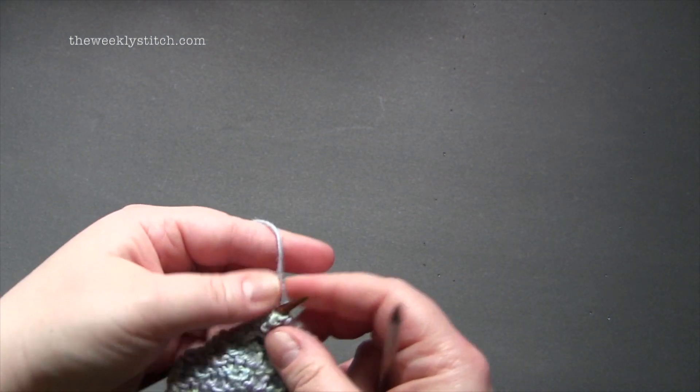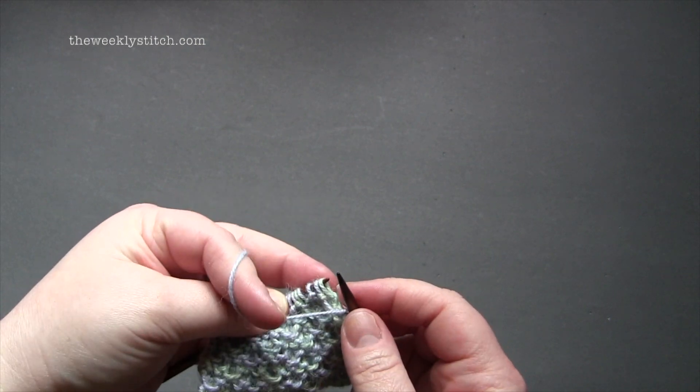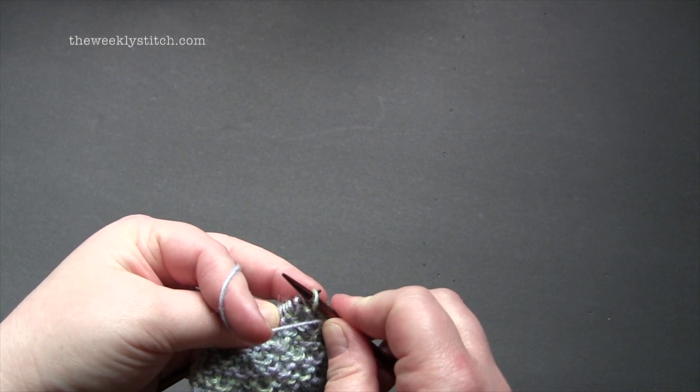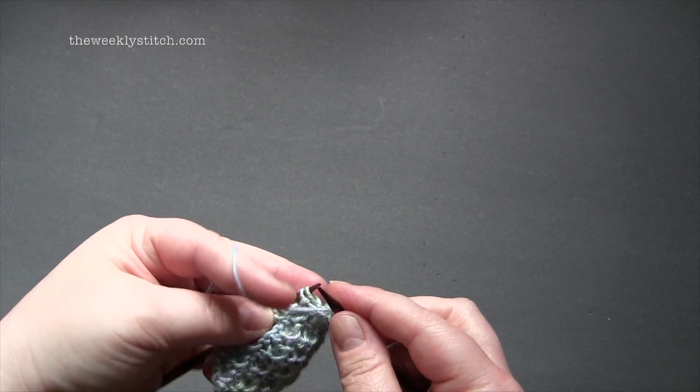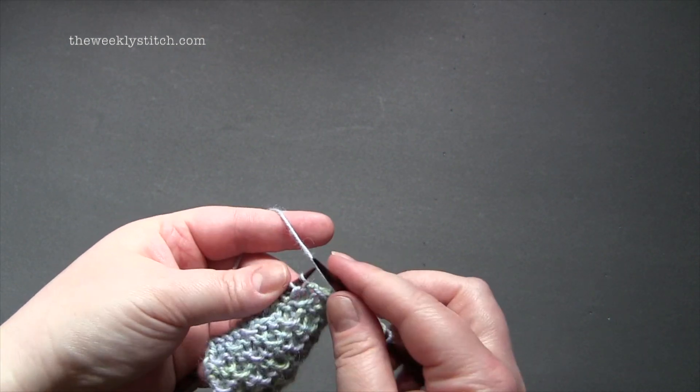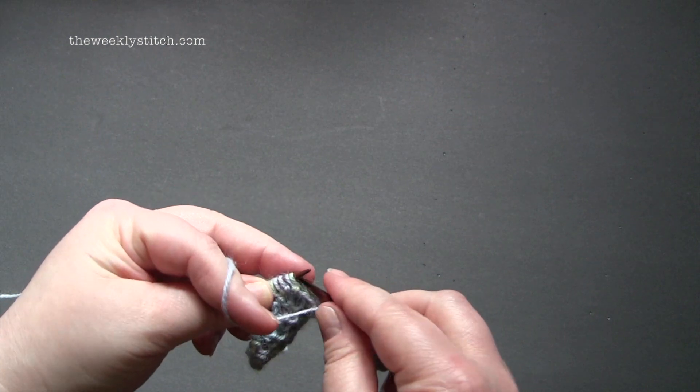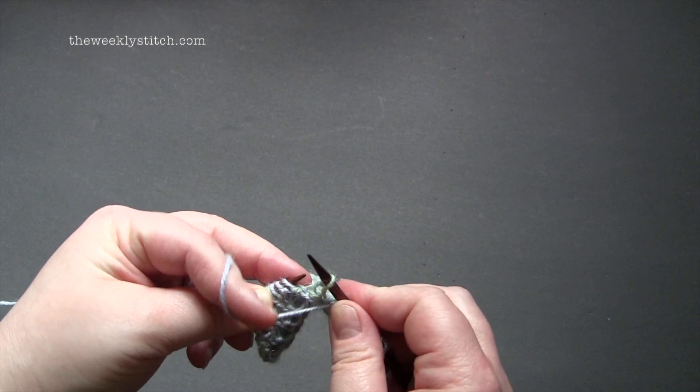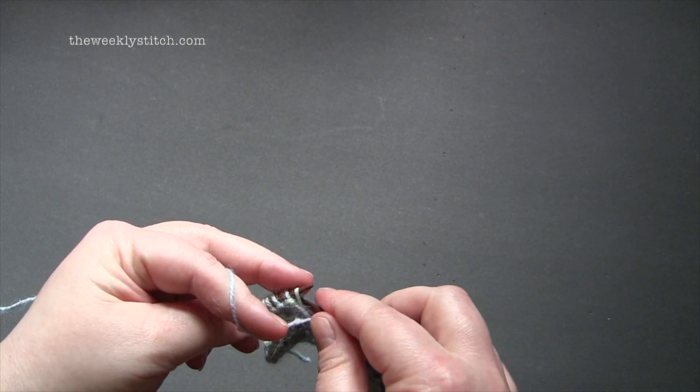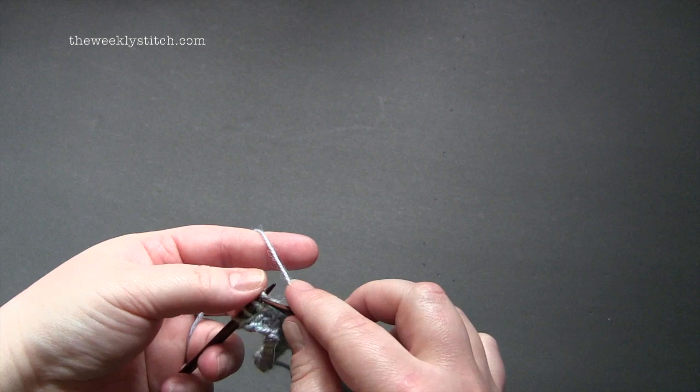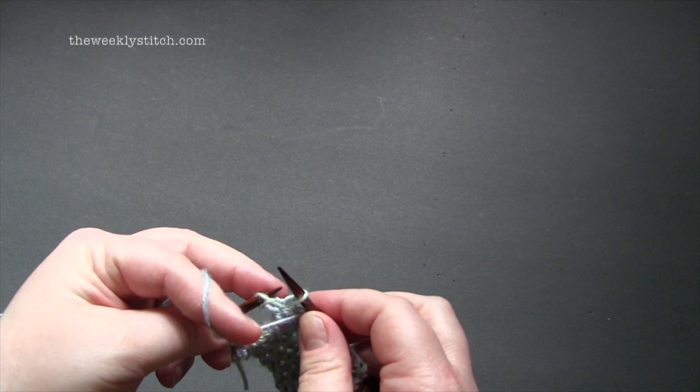For row four, you knit the first stitch and the repeat is slip one with the yarn in front, knit three. And you'll end the row with slip one with yarn in front, knit one.